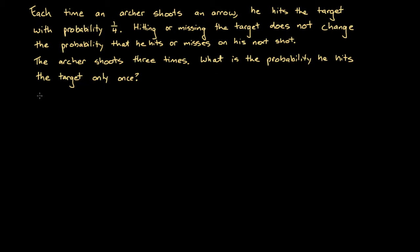This question is asking us to find the probability of one hit. And if we get just one hit, that means we're going to get two misses, because the archer shoots three times. So really we're trying to find the probability of one hit and two misses.